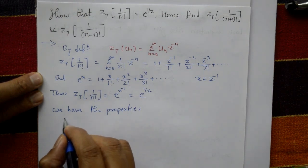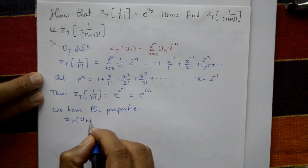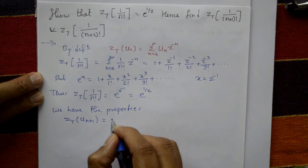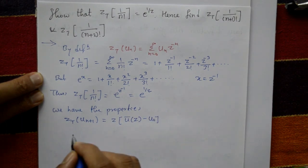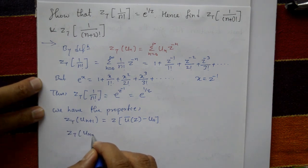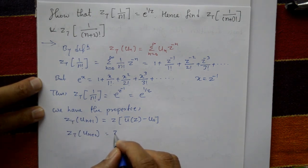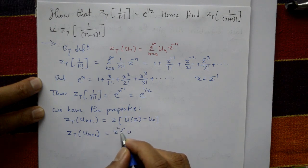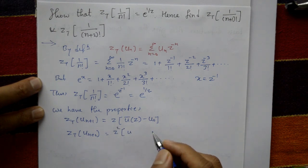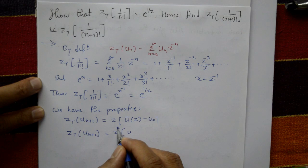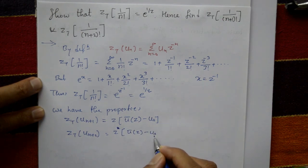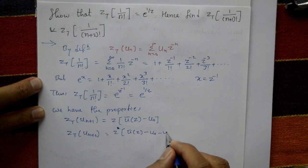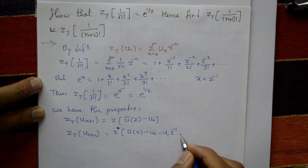Now take the second part. The Z transform of u_{n+1} is equal to Z times U-bar of Z minus U_0. And the Z transform of u_{n+2} is equal to Z squared times U-bar of Z minus Z times U_0 minus U_1 times Z to the minus 1.